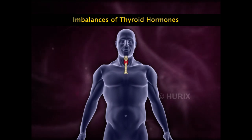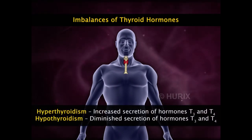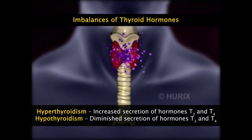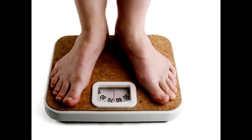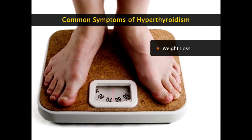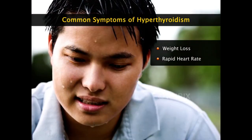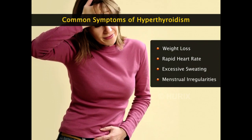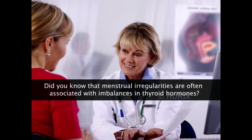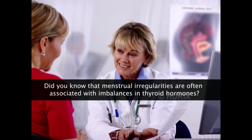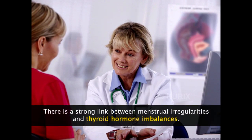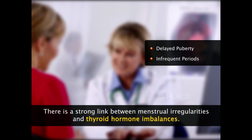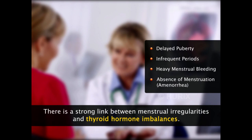Imbalances in levels of thyroid hormones cause two conditions: hyperthyroidism and hypothyroidism. Hyperthyroidism is increased secretion of thyroid hormones, and hypothyroidism is a decrease in thyroid hormone secretion. Common symptoms of hyperthyroidism include weight loss, rapid heart rate, excessive sweating, and menstrual irregularities. There is a strong link between the menstrual cycle and imbalances in thyroid hormones. Imbalances in thyroid hormones often cause delayed puberty, infrequent periods, heavy menstrual bleeding, or absence of menstruation, known as amenorrhea.